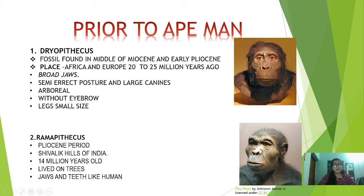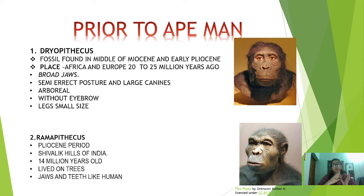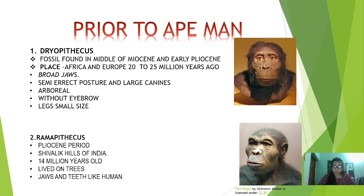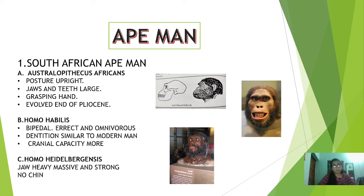In Ramapithecus, they evolved during the Pliocene period. Their fossils were found in the Shivalik Hills of India, and they were present mainly around 14 million years ago. They also lived on the trees, and their jaws and teeth were resembling those of the modern man.